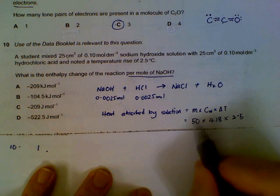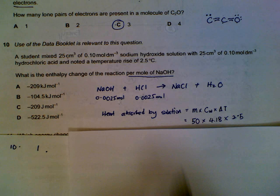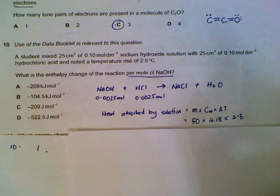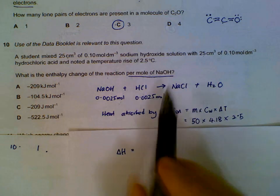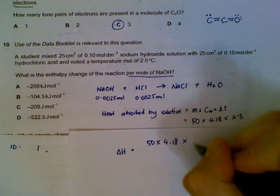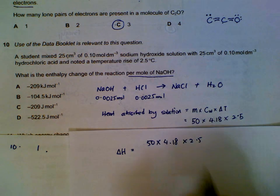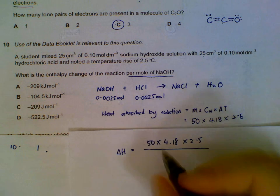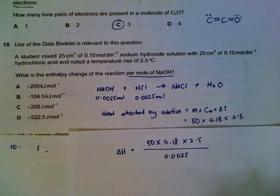Where did this energy come from? It comes from the sodium hydroxide neutralizing the hydrochloric acid. They ask for enthalpy change per mole of NaOH, so the change in energy equals whatever energy was produced, which we assume is equal to the energy absorbed by the solution. We used 0.0025 moles of sodium hydroxide, so we take this and divide by 0.0025.